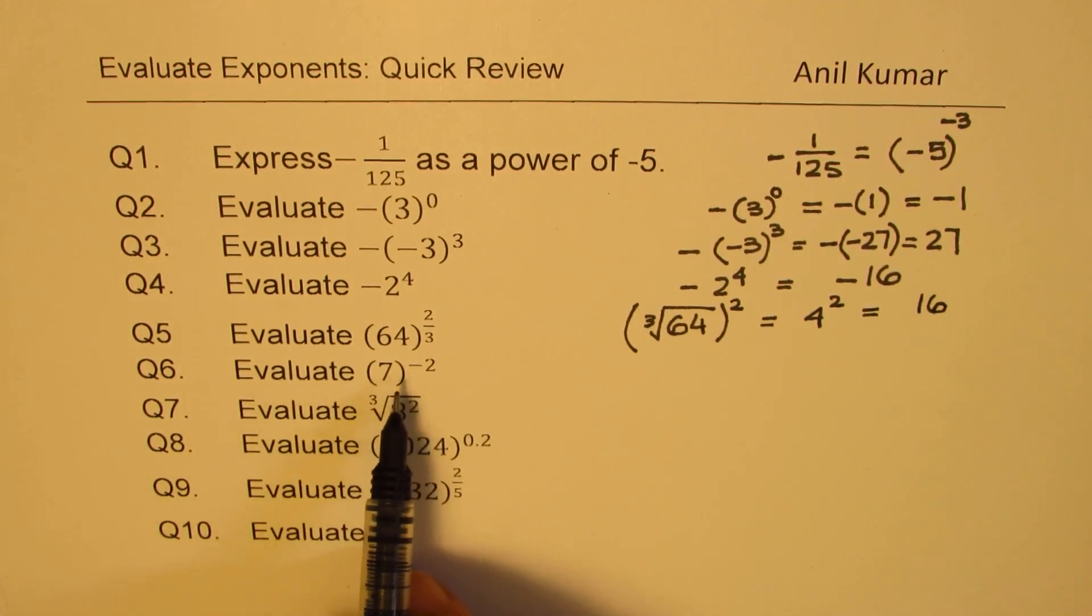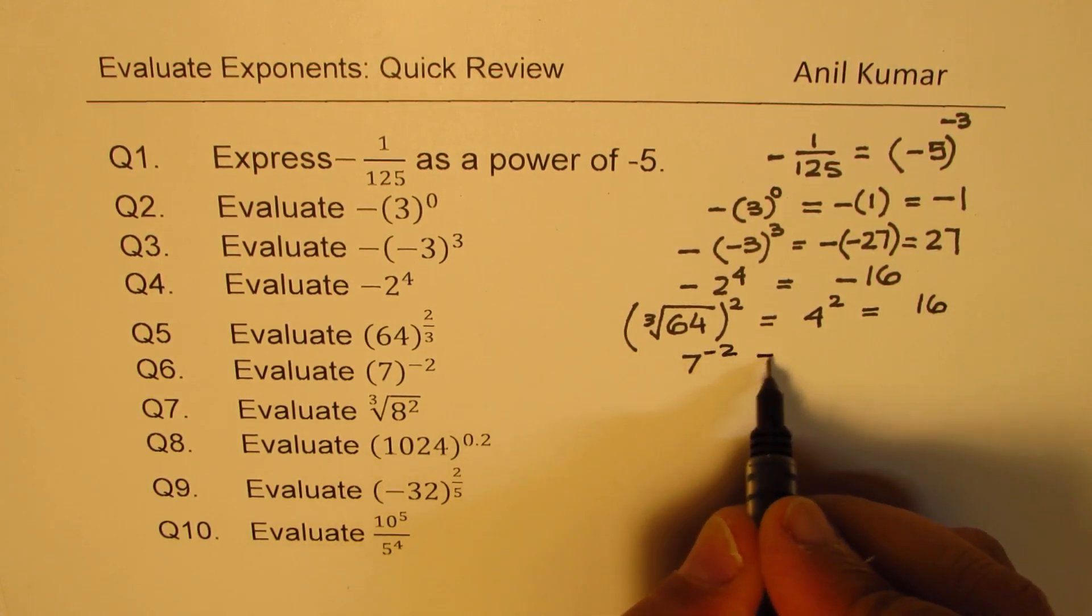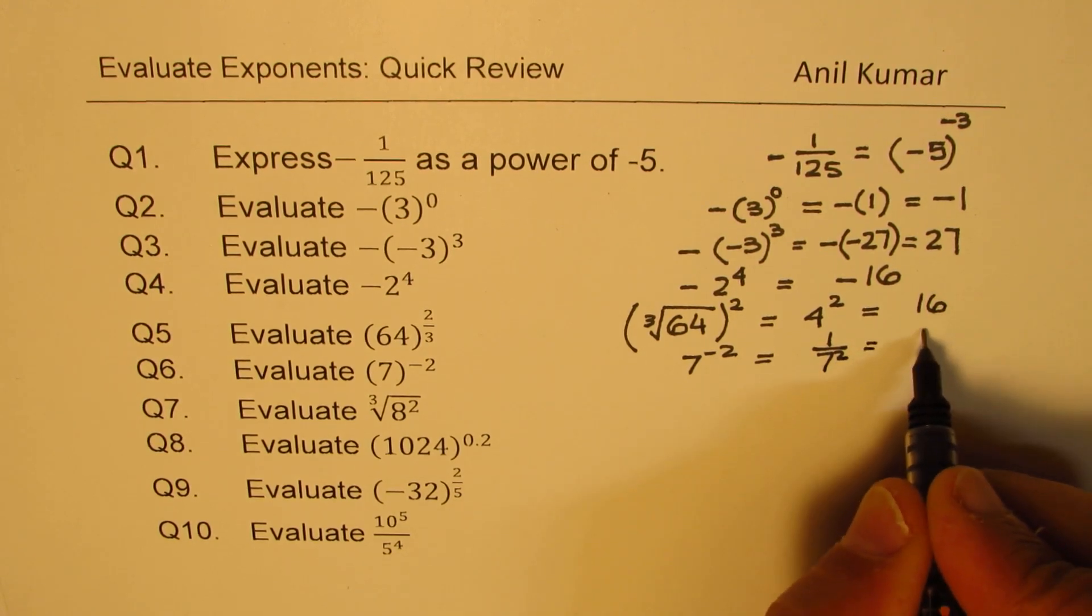Evaluate 7 to the power of minus 2. So we have 7 to the power of minus 2. Minus makes it 1 over 7 and square. So it is 1 over 49.